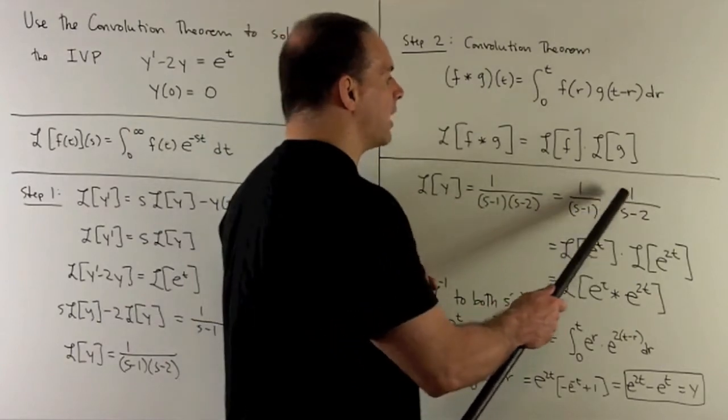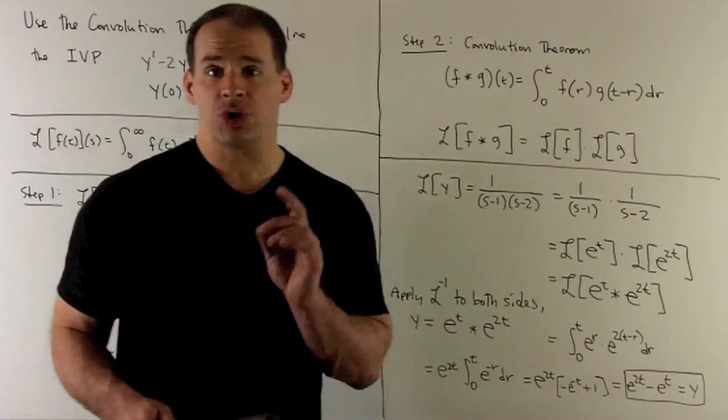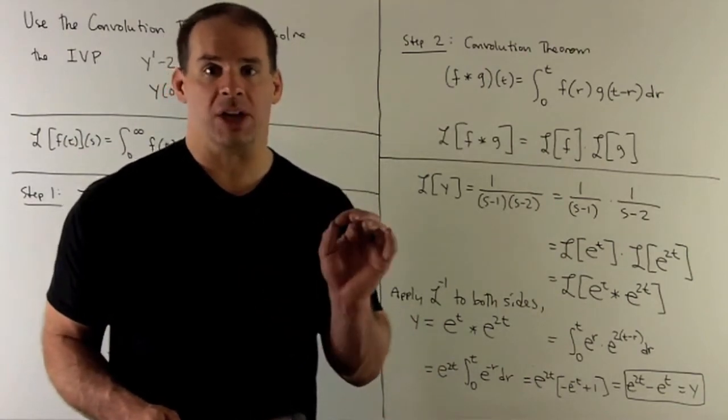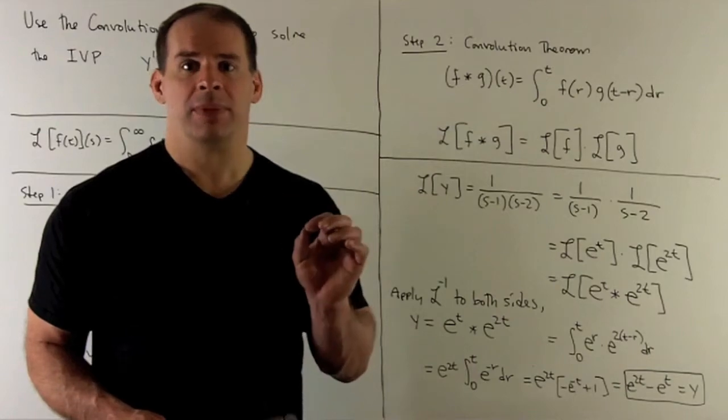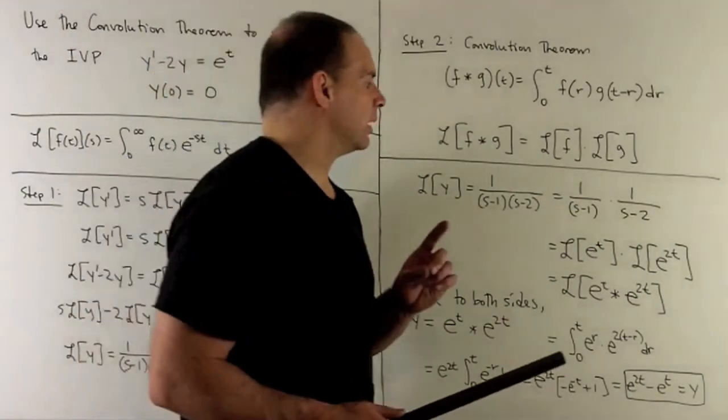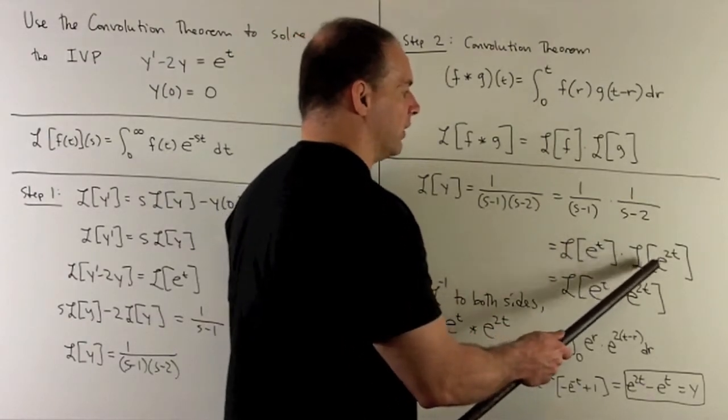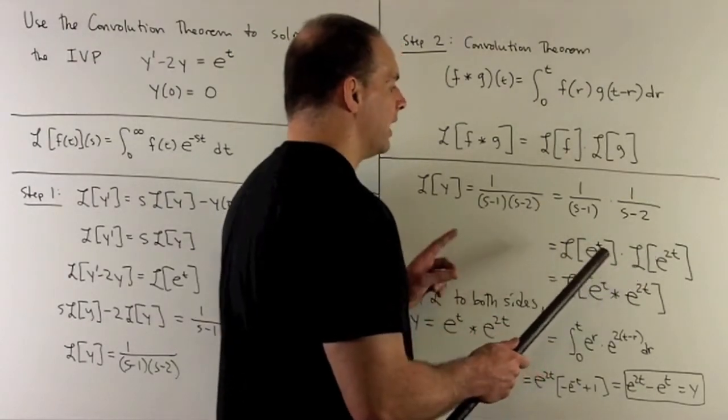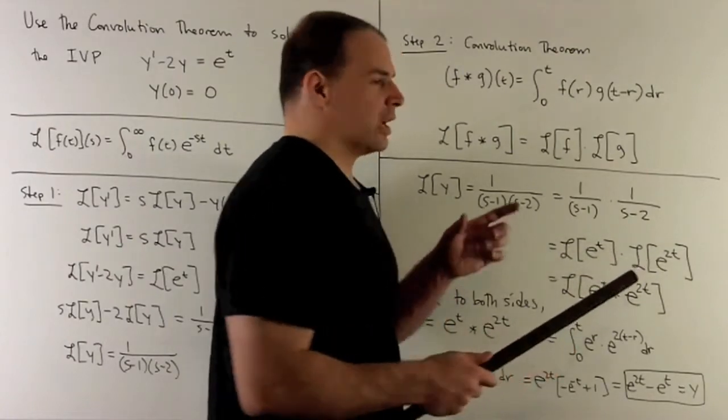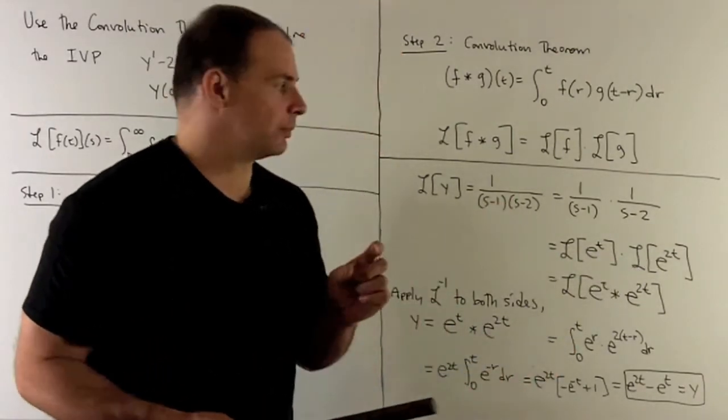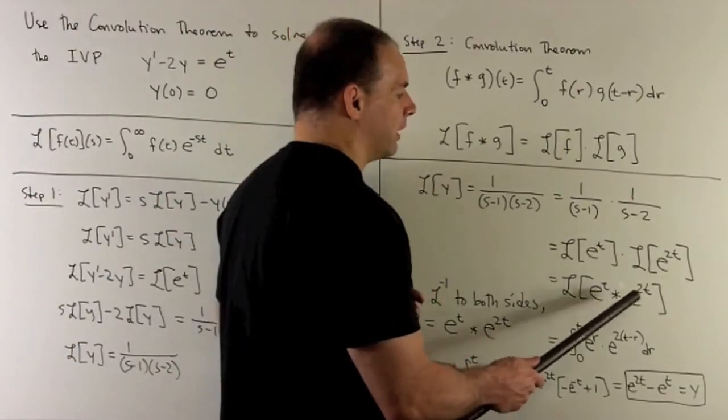So, the idea is the Laplace transform of e to the at is 1 over s minus a. We'll have Laplace transform of e to the t times Laplace transform of e to the 2t. Now, since we have a product of Laplace transforms, we can combine them as a convolution. I have the Laplace transform of e to the t convolved with e to the 2t.